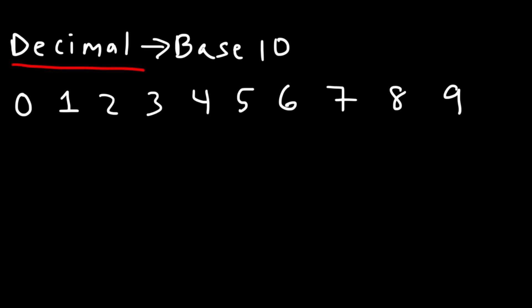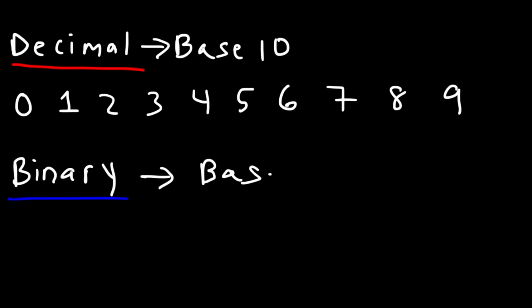The next system you need to be familiar with is the binary system. When you hear the prefix bi, think of the word bi, which means two. So the binary system is a base two system, and there are only two numbers: zero and one.